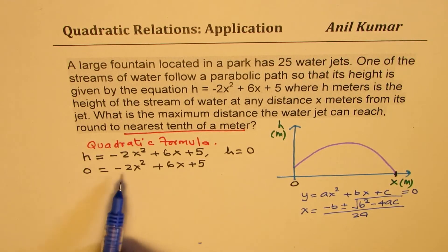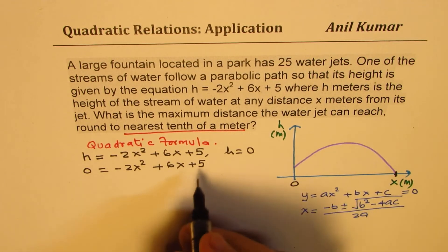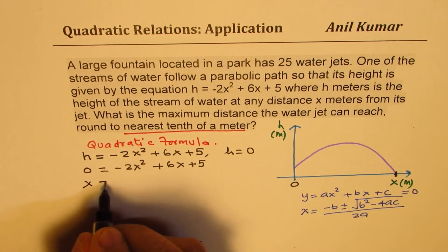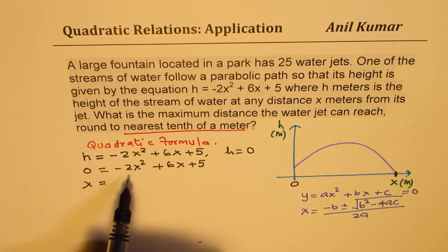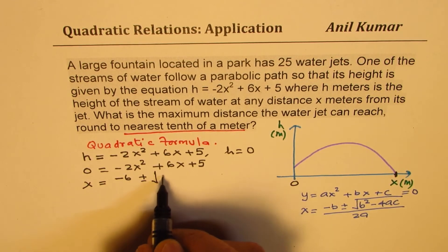x is minus b plus minus square root of b squared minus 4ac divided by 2a. Now here, a is minus 2, b is 6, and c is 5. So let's apply this formula and find x when height is 0. So x is going to be equal to minus of 6 plus minus square root of b squared,